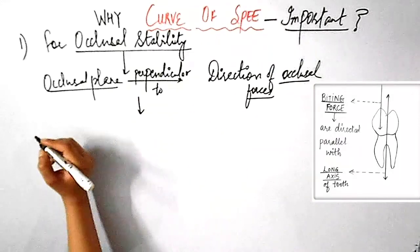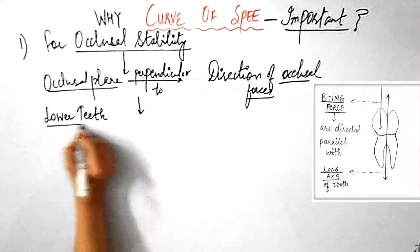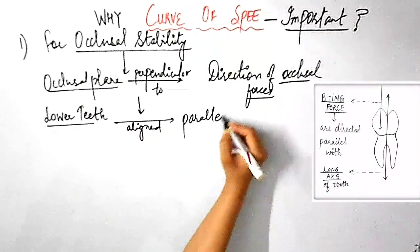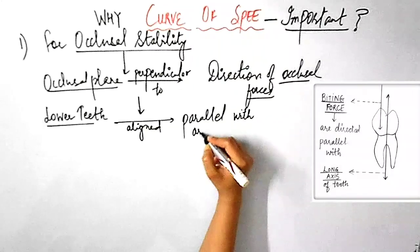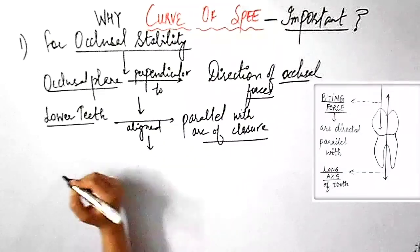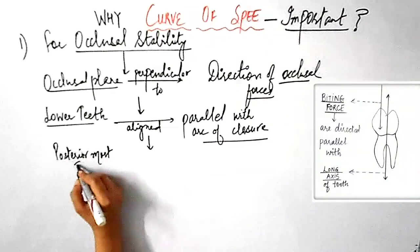So, to ensure that the biting forces are directed parallel with the long axis of the teeth, as you can see in this picture, the long axis of each lower tooth is aligned parallel with the arc of closure. And hence, the posterior most tooth in the lower arc is aligned with a forward tilt.